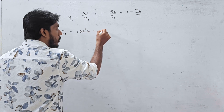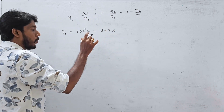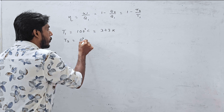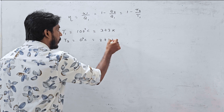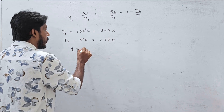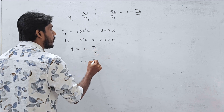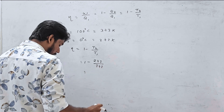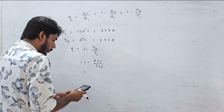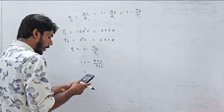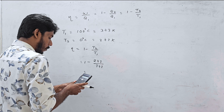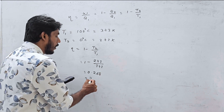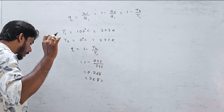Converting: the steam point 100°C plus 273 gives T1 = 373 K. T2 is the low temperature — the ice point is 0°C, which converts to 273 K. So efficiency = 1 - T2/T1 = 1 - 273/373. The answer is 273 divided by 373, giving approximately 0.268. That is 26.8%.